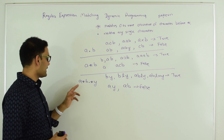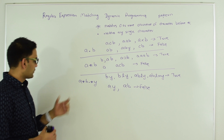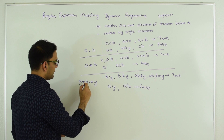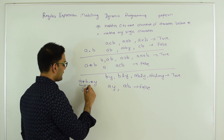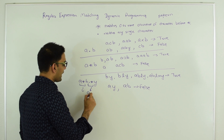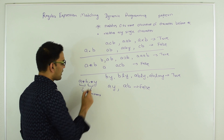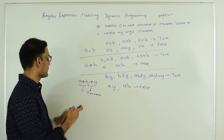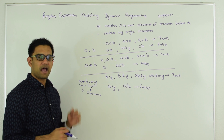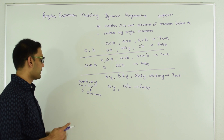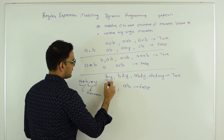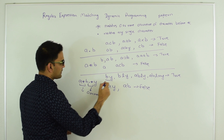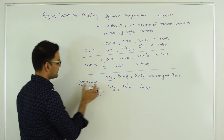Let's take one more example: A star B dot star Y. Here we can have zero or more occurrences of A, then we need one B, and then zero or more occurrences of any character. Dot star means dot matches any character and star means zero or more of that character. So between B and Y we can have zero or more of any characters. For example, BY matches: zero occurrences of A, then B, then zero occurrences of dot star, then Y.